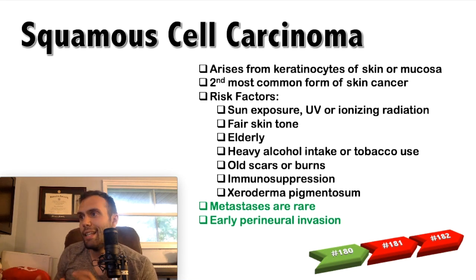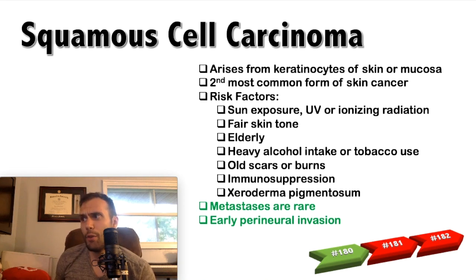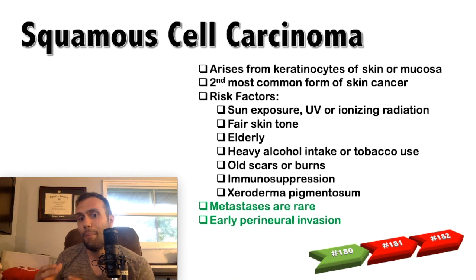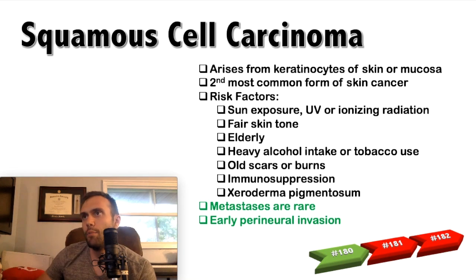Squamous cell carcinoma is the more aggressive variant between basal cell and squamous cell carcinomas — it's a little bit faster growing. Melanoma in general has a much higher rate of metastasis compared to these two. A very classic feature of squamous cell carcinoma is early perineural invasion — local neurologic numbness, paresthesias, and painless lesions are common. People may be asymptomatic because the carcinoma is invading local neurologic structures. That painless, numbness, tingling feeling over the lesion is something to associate with squamous cell carcinoma.